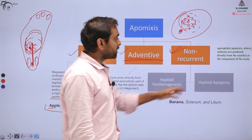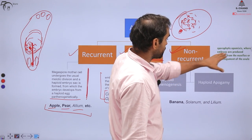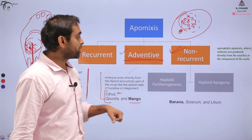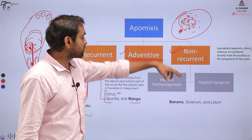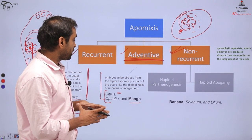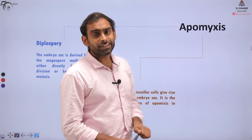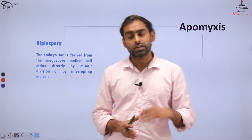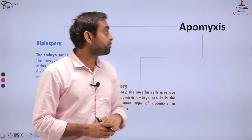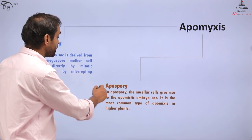Apart from that there is an example of Sporophytic Apomyxis, where embryos are produced directly from the nucellus or integuments — which is essentially the same as Adventitive Apomyxis. Besides this fundamental classification, Apomyxis can also be divided in another way.